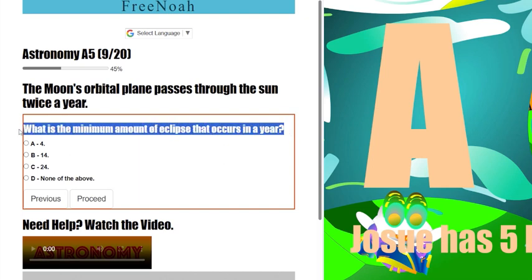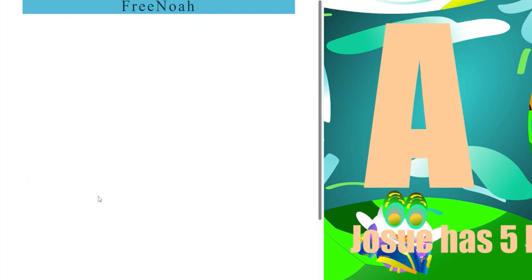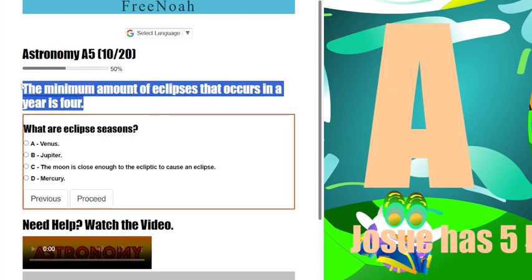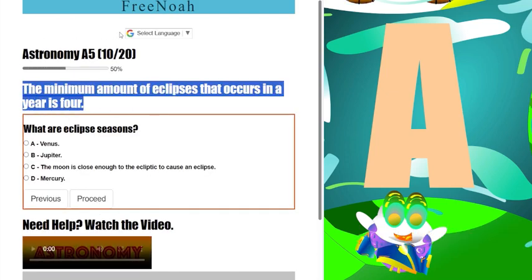Let's bridge off of question 9 here. What is the minimum amount of eclipses that occur in a year? The minimum amount of eclipses that occur in a year is 4.